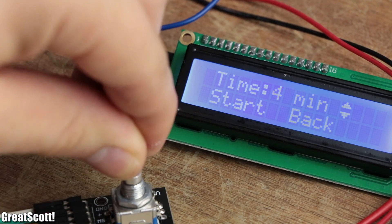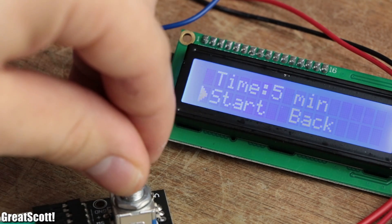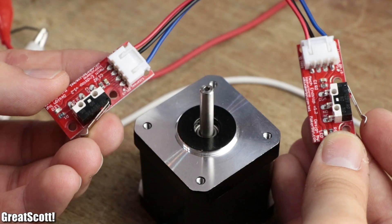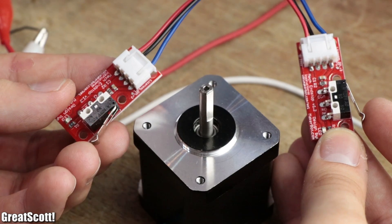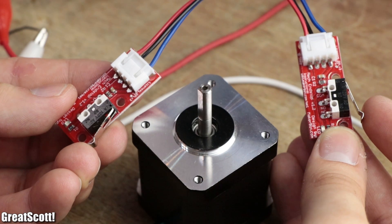In time mode though, I can set a time in which the platform should travel either from left to right or right to left. Again, the limit switches act as an indicator when the platform is all the way left or right.